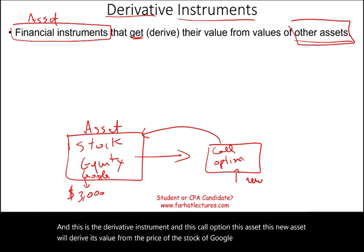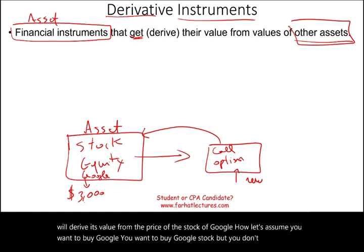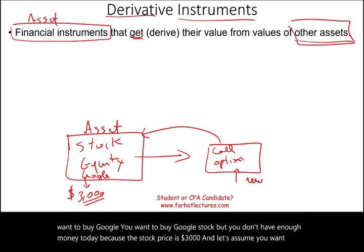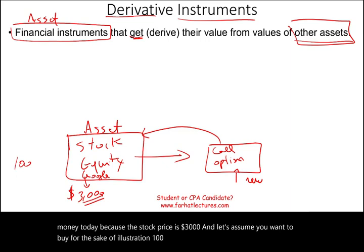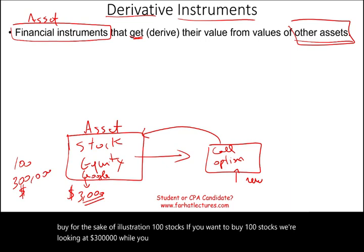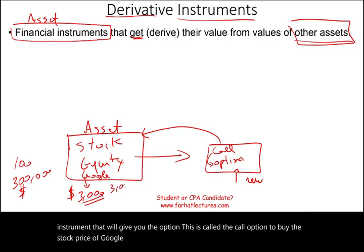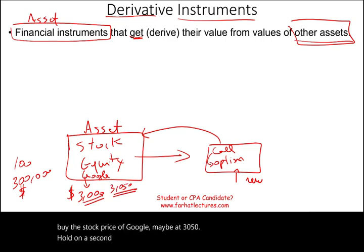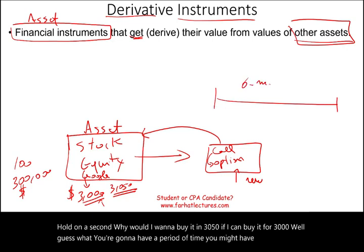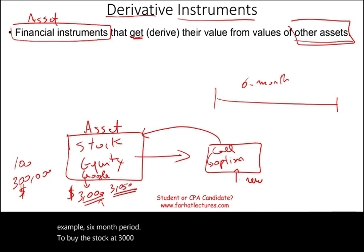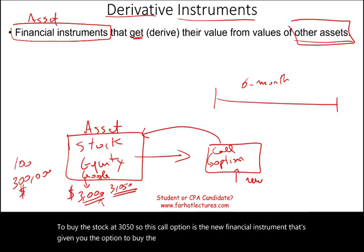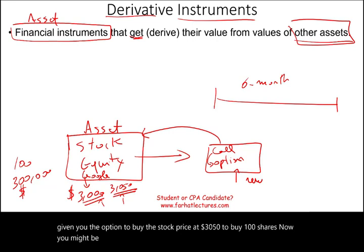Let's say you want to buy Google stock but you don't have enough money today — the stock is $3,000 and you want to buy 100 shares, which is $300,000. What you can do is buy another financial instrument, a call option, that gives you the option to buy the stock at $3,050. You have, for example, a six-month period to buy the stock at $3,050 for 100 shares.